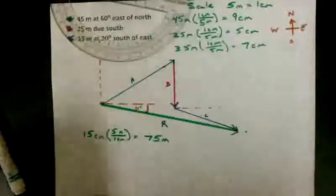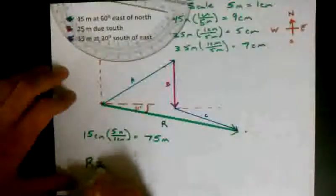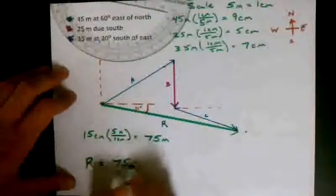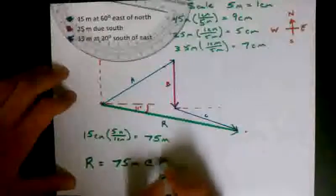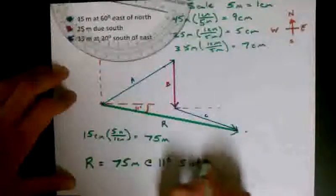And so now I'm ready to write my final statement. My resultant is 75 meters at 11 degrees south of east.